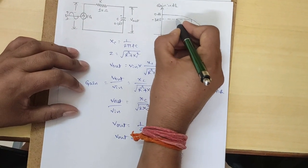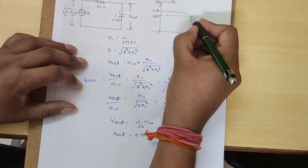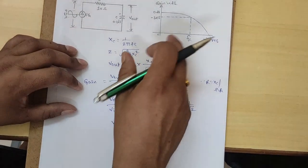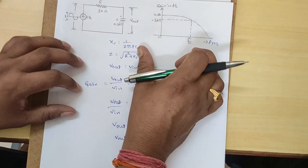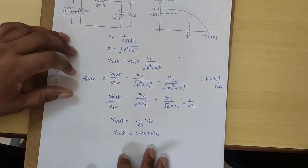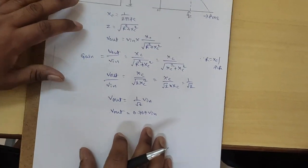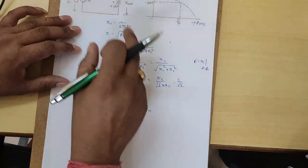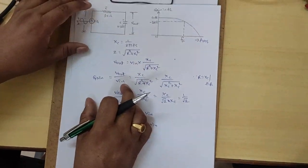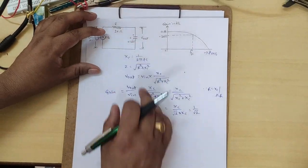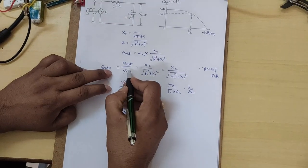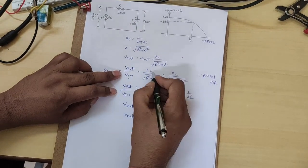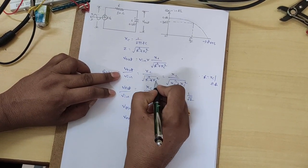You have to draw a straight line, and at F = Fc you will get -3 dB in the graph. Now you have to find the cutoff frequency formula from this RC circuit. We already know V_output / V_in = Xc / √(R² + Xc²).